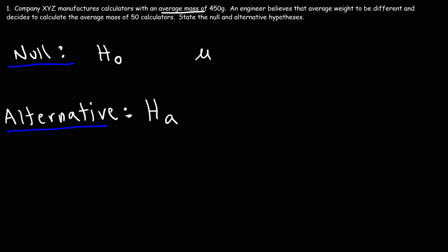If you hear the word percentage, that means you're dealing with a proportion. The company manufactures calculators with an average mass of 450, so the accepted mean is 450. The researcher believes this to be different — he believes the average mass is not 450 grams. So that is the alternative hypothesis.